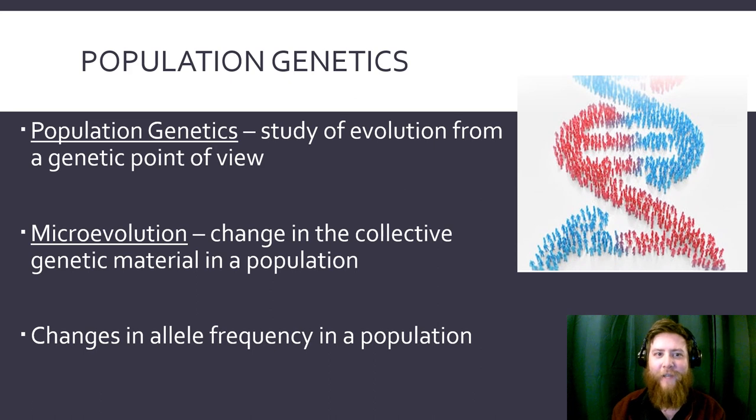This is the study of evolution from the genetic point of view. We're looking at the DNA of organisms and how that has progressed over time. This kind of evolution is called microevolution, where it's the change in the collective genetic material in a population. Think of this as a change in allele frequency. If a population of white flowers mutates and has a red gene, and that gene starts to become more popular, that is what microevolution looks like—these flowers slowly changing from white to red, depending on how fast that gene spreads and how fit it is.